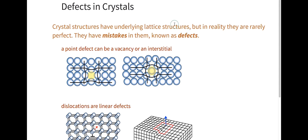Crystals have an underlying lattice structure, but in reality they're rarely perfect. They usually have mistakes in them, which we call defects. A point defect can be a vacancy where an atom is missing from a lattice, and it can also be an interstitial where there's an extra atom in the lattice.